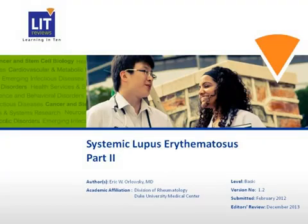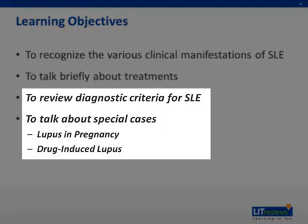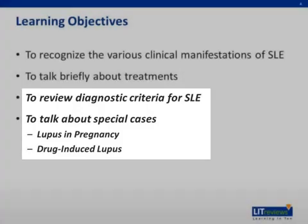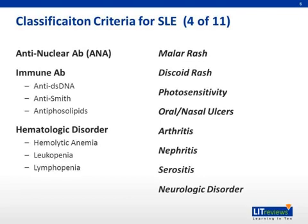Systemic Lupus Erythematosus, Part 2 of 2. Once again, here are our learning objectives. In this talk, we will be focusing more on the last two objectives, highlighted here. We will continue discussing the classification criteria and then discuss some special situations involving SLE. Having already discussed the laboratory-based criteria last time, we will pick up with the rest of the clinical criteria.